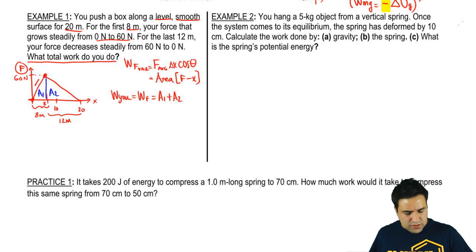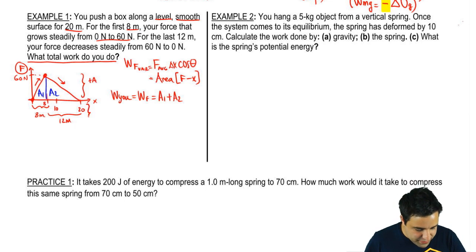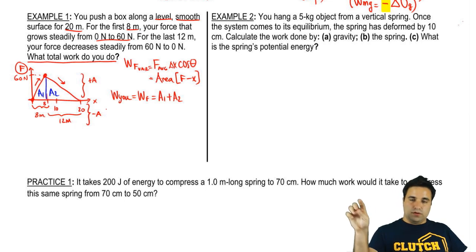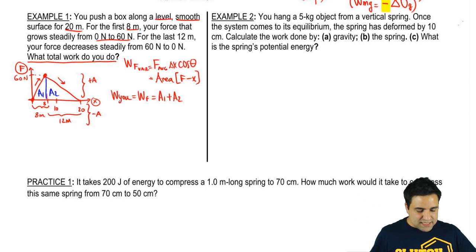Now, before I start calculating this, just to be clear, even though this one is going up and this one's going down, they're both positive areas because they are above the x-axis. Negative areas, areas below the x-axis would be, or areas below the negative x-axis would count as negative areas, right? But that's not the case here.